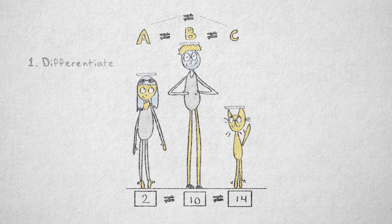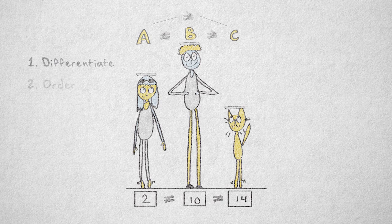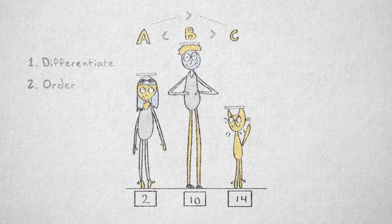Of course, it would be weird to use the numbers 2, 10, and 14 like this, because there's another type of relation that we can immediately see, which is not reflected in the assigned numbers. I'm talking about the order relation between A, B, and C. Person B is the tallest, so he should receive the highest number, 14. And C is shortest, and so should receive the lowest number, 2.